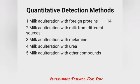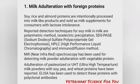Now for quantitative detection methods, there are five categories: first, milk adulteration with foreign proteins; second, milk adulteration with milk from different sources; third, milk adulteration with melamine; fourth, milk adulteration with urea; fifth, milk adulteration with other compounds.